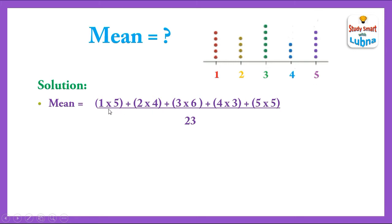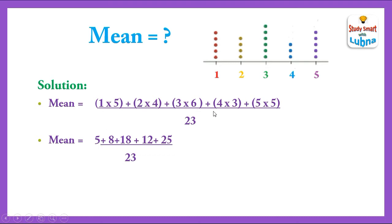In this way we write the values in the numerator. For the denominator we count the total number of dots, which is 23. Solving: 1×5=5, 2×4=8, 3×6=18, 4×3=12, 5×5=25. Adding the numerator values gives 68 upon 23, which equals 2.9. So the mean of this Dot Plot is 2.9. In this way we can find the mean using the Dot Plot.